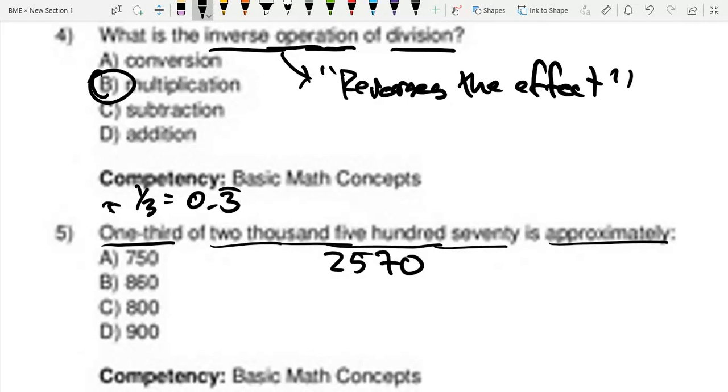Now, in order to do this, we have to approximate, right? So we'll do 2,570 times 0.33, and that is 848.1. So this is pretty close to 850 or 860. I'm not so sure what it says over here, but this is the closest option.